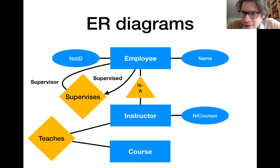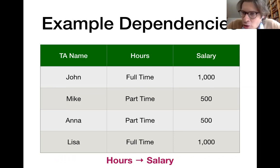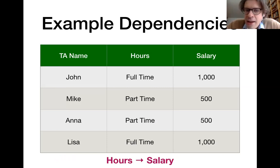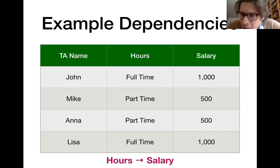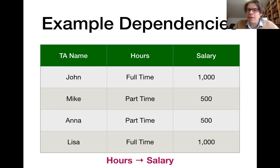We have then seen how we can take an initial draft for a database and refine it by first of all detecting dependencies within your data — in particular, if the value in certain columns depends on the value in other columns. Here, for instance, we have a table with information about TAs, about the hours they work and about their salary. The salary is essentially a function of the number of hours worked, which is why we have a functional dependency that links the hours column to the salary column. That means we are storing data redundantly, and that causes all kinds of problems. So we have seen how we can get rid of that redundancy by decomposing tables.